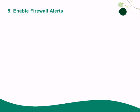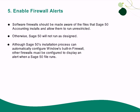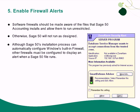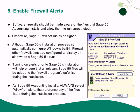Finally, let's take a look at firewalls. Software firewalls running on the system should be made aware of the files that SAGE50 accounting installs and allow them to run unrestricted; otherwise, SAGE50 will not run as designed. Although SAGE50's installation process can automatically configure Windows' built-in firewall, non-Microsoft firewalls must be manually configured to display an alert when a SAGE50 file runs for the first time on the system. This setting is usually located in the Notifications section of your firewall program's control panel. Ensuring that your firewall's alert setting is turned on prior to SAGE50's installation will help you make certain that all relevant SAGE50 files are added to the firewall program's safe list. As SAGE50 is installed, always select Allow on alerts that reference any of the files listed during the installation process.